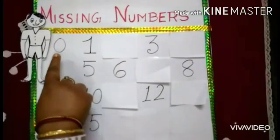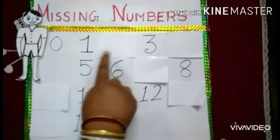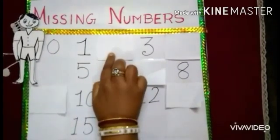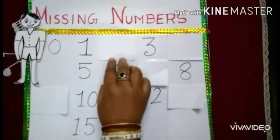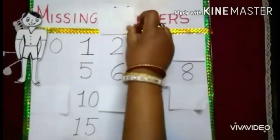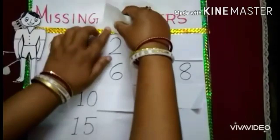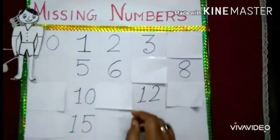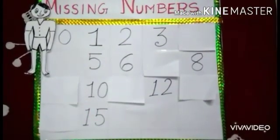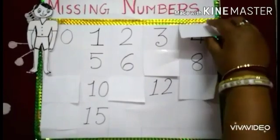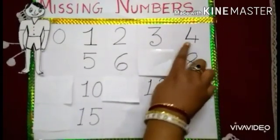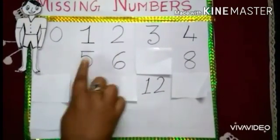If I start here from zero, one — which number is missing? Say loudly, children. After one, which number comes? Number two. Very good. Then three. Then, next, again missing — which number will you write here? Number four. Very good. After four, five. Then six.